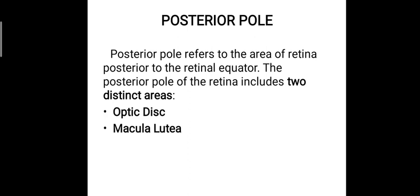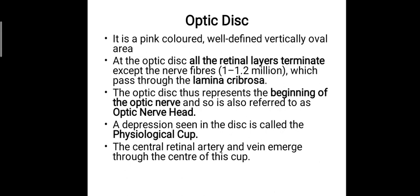The posterior pole refers to the area of the retina posterior to the retinal equator. It includes two distinct areas: the optic disc and the macula lutea. The optic disc is a pink-colored, well-defined, vertically oval area where all retinal layers terminate.